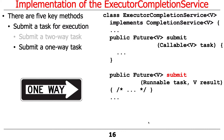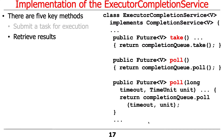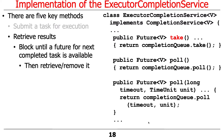Here's how we get the results: take, poll, and timed poll. All they really do is forward to the appropriate method on the completion queue, which is a blocking queue.